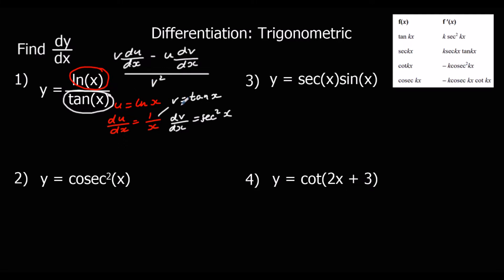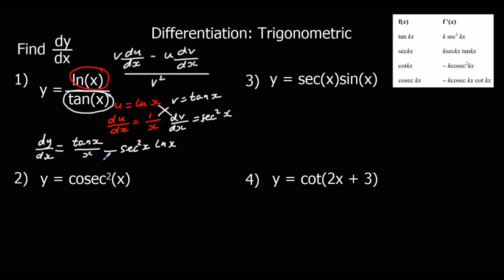Substituting into the quotient rule: dy/dx is v du/dx, which is tan x over x, minus u dv/dx, which is sec squared x times ln x, all over tan squared x. And we'll leave it like that.